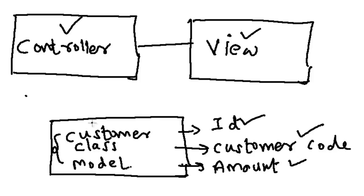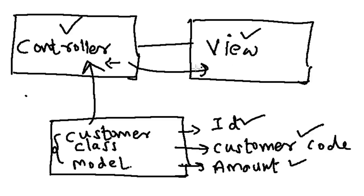This Customer class — this model — we will create an object in the Controller, flourish it with some data, then pass this object to the View. In the View, we will display the values of the object — whatever values we have flourished in the Controller — on the View, which is our ASPX page.